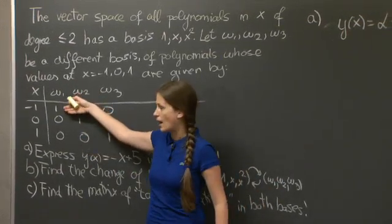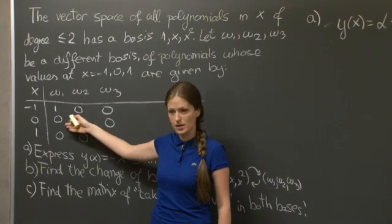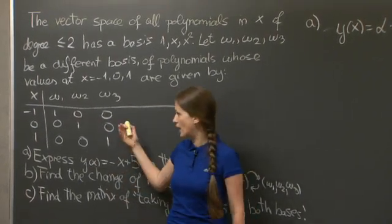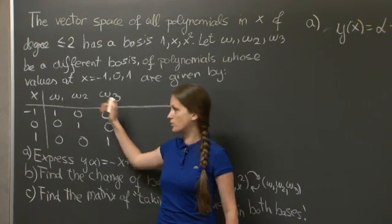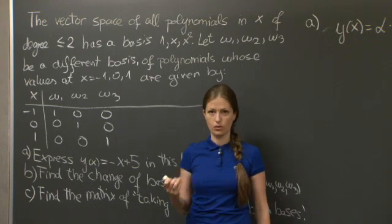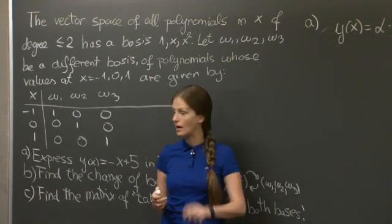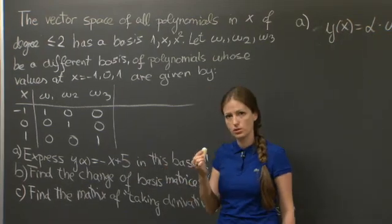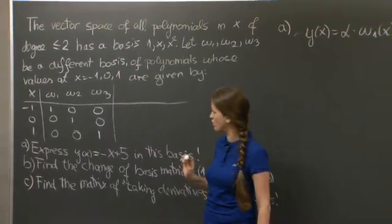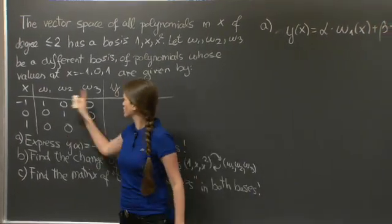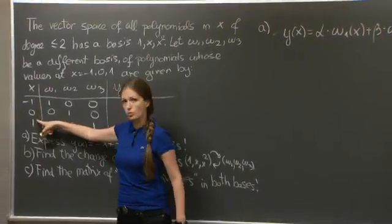A quadratic polynomial is all the information we need about it is in values at three points. So say w1 is a1 plus b times x plus c times x squared. Find a, b, and c. Find w1, w2, w3 explicitly. And then go back to this system and try to find alpha, beta, and gamma. However, there's a trick.